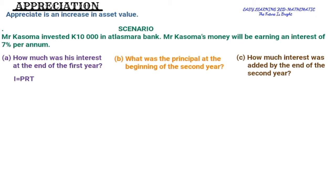To find interest we use the formula: I = (P × R × T) / 100%, where I is interest, P is principal, R is the interest rate, and T is time. If you're not familiar with this, there's a video where I talked about simple interest and compound interest — check that out.